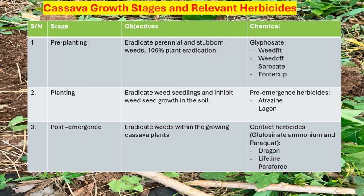Other examples of pre-emergence herbicides include Lagon and Premestra. Go to a reputable agricultural shop — they will know pre-emergence herbicide. If you go to street vendors, they might not understand the difference between pre-planting and pre-emergence because they don't know when the right stage to apply each one is. A good agricultural shop will differentiate them for you. Use pre-emergence within 48 hours of planting.